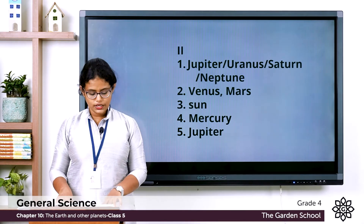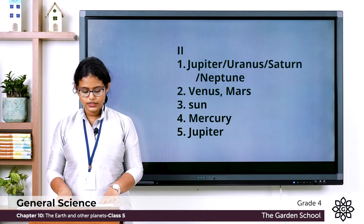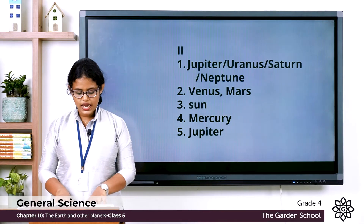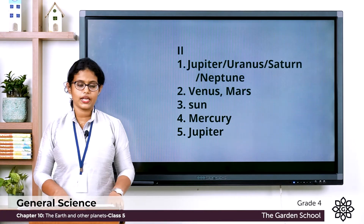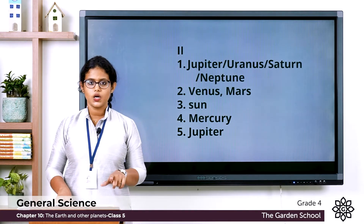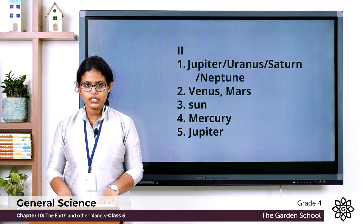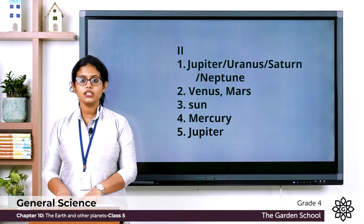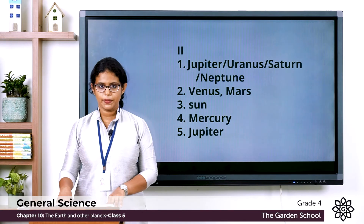The second one: Mercury, then two blanks, and the Earth are the inner planets. The inner planets are Mercury, Venus, Mars, and the Earth.